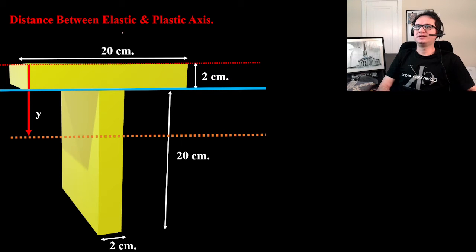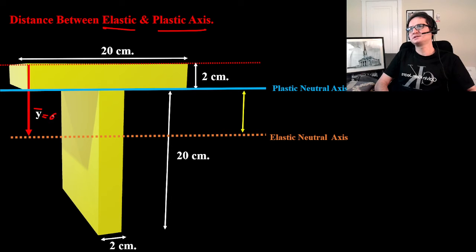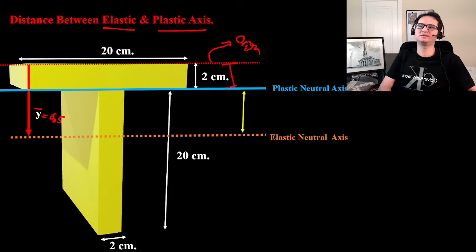For distance between elastic and plastic axis: this is elastic axis which y-bar equals 6.5 from origin, and this is again our origin. And plastic neutral axis, it locates 2 centimeters at intersection of web and flange, that's 2 centimeters below the origin.